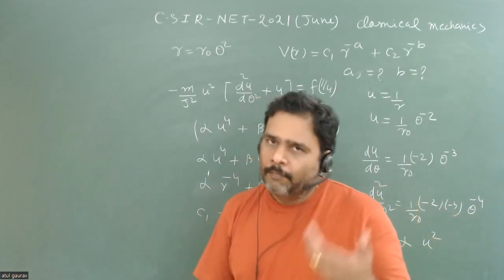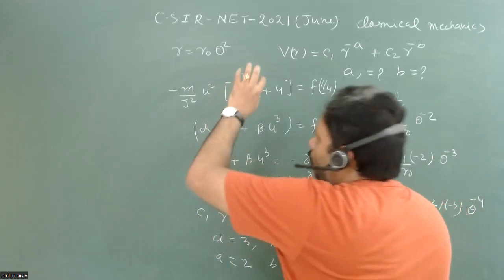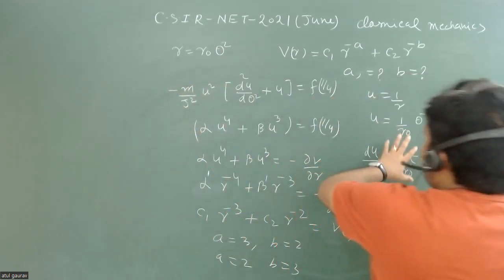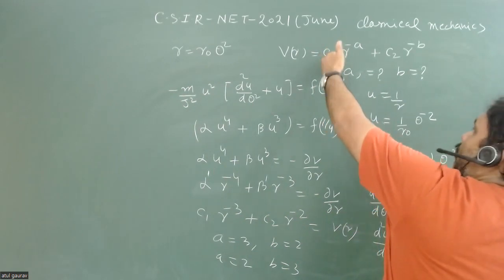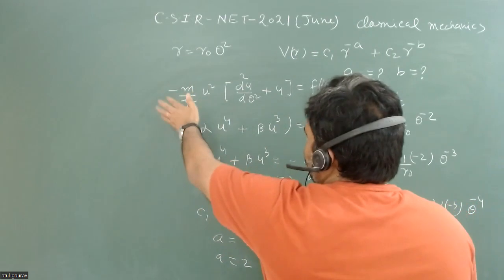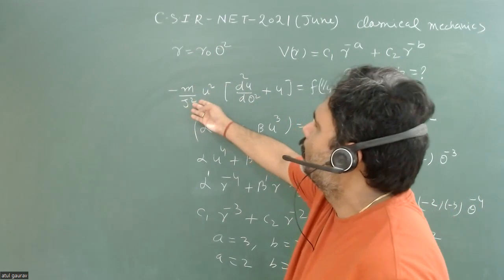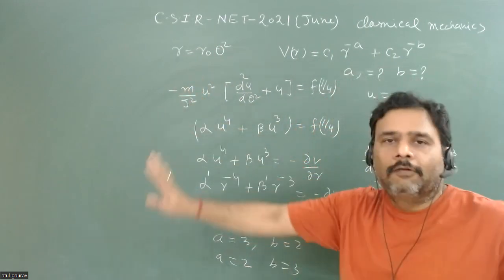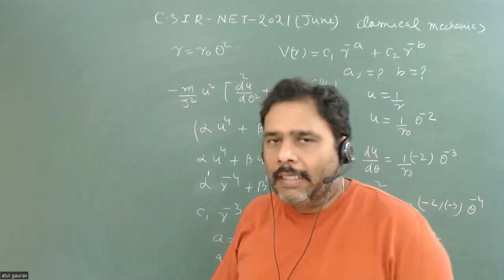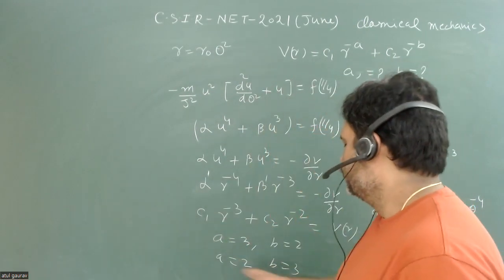So this is a straightforward problem, but only one thing is how you are doing the smart calculation. Don't care about this constant unless it is not given that c1 is greater or c2 is greater. Even one best thing is that you can put all the thing: r naught is equal to 1, m is equal to 1, j is equal to 1 such that your equation will very much clean up.